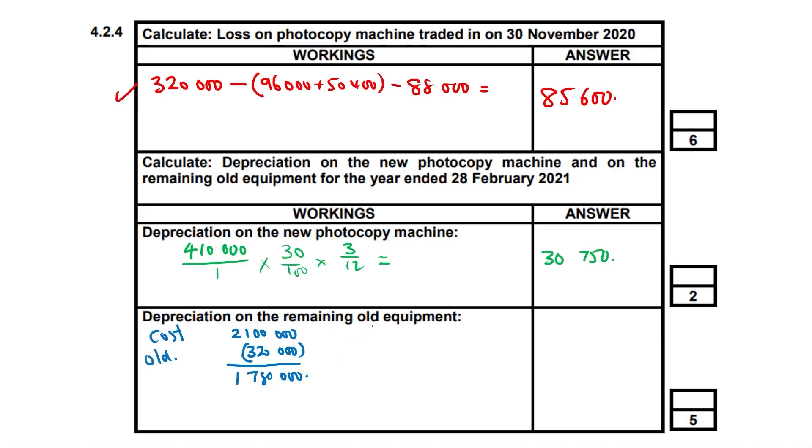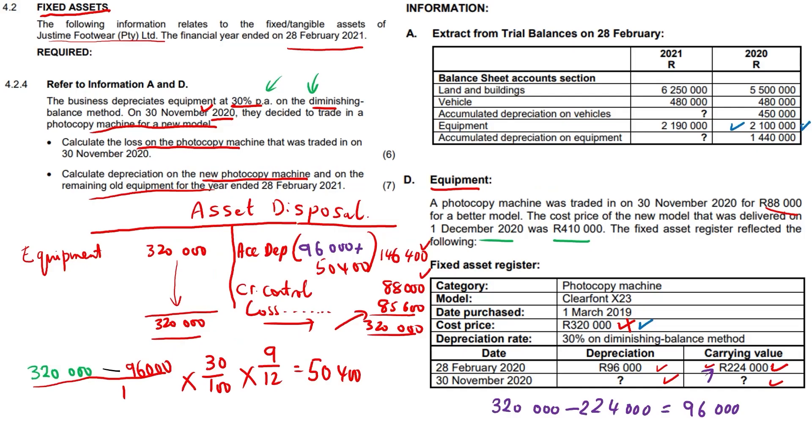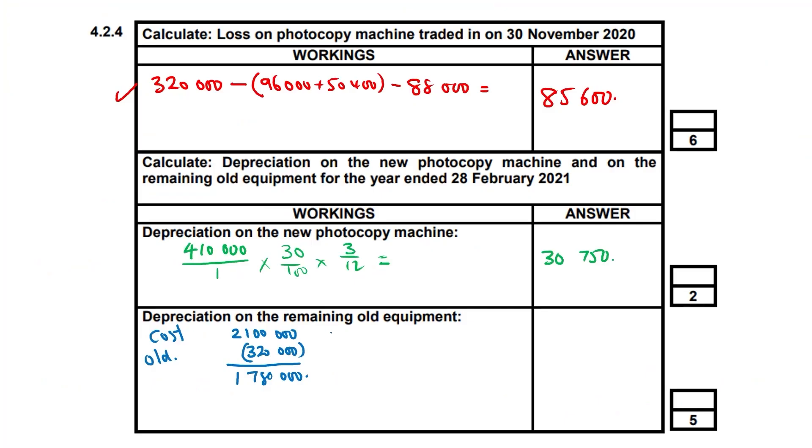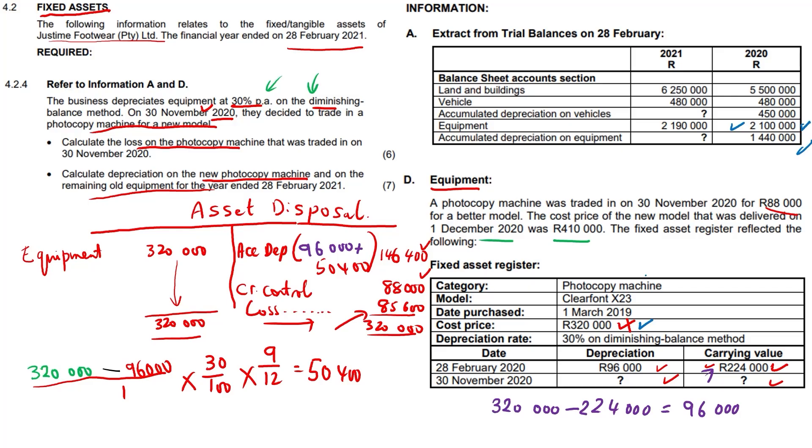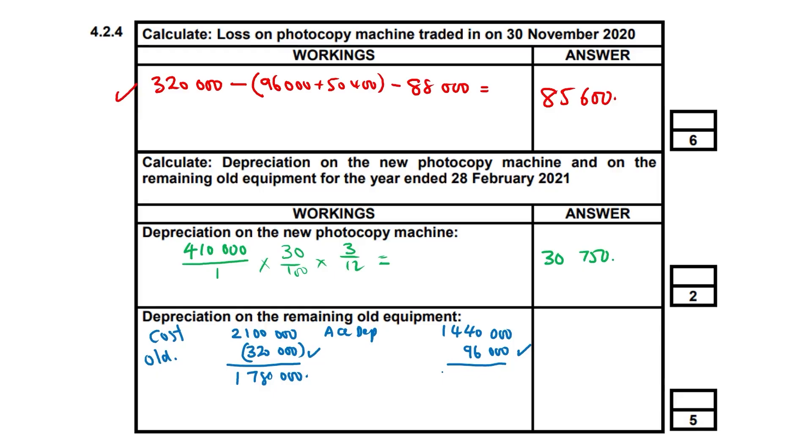Next, we've got to work the accumulated depreciation figures as well because they're working on diminishing balance. Accumulated depreciation at beginning of year on everything was $1,440,000. We now, as we have removed the old equipment from the picture, we've got to remove all the depreciation at the beginning of the year that was attributable to the old equipment. That $96,000—we take that out. $1,440,000 minus $96,000 gives us $1,344,000. Now we can start moving numbers forward.